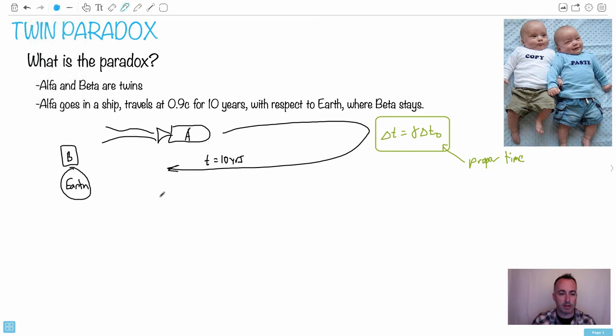We can say, alright, Delta T0 is going to be Delta T over Gamma. And we know that Delta T is 10, so it's going to be 10 over Gamma. Let's figure out what Gamma is. Do you remember that one? That's 1 over the square root of 1 minus V squared over C squared. And you can look that one up too. You don't have to memorize it.